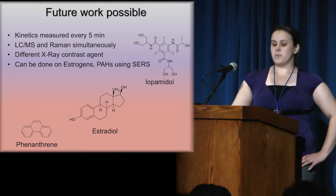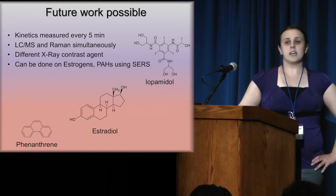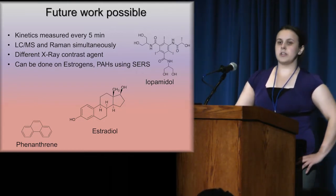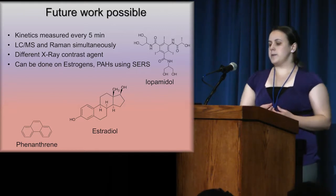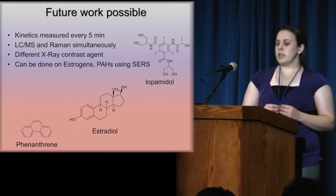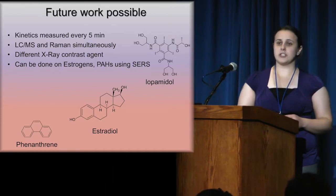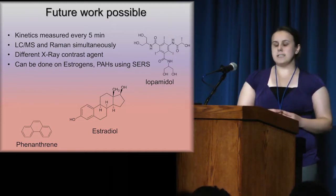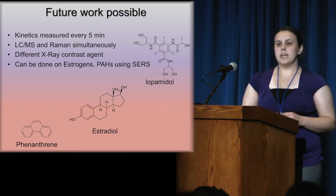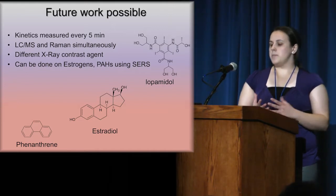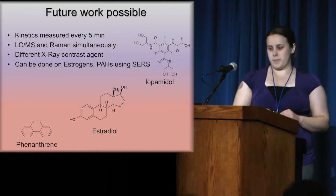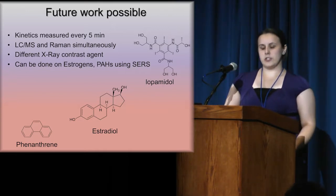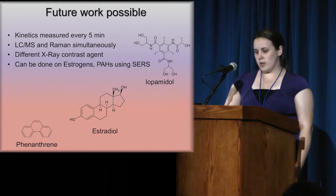For future work, we have been measuring kinetics every 30 minutes, but we eventually want to go faster — for example, every five minutes — to understand what is happening during those intervals. We also want to use LC-MS and Raman simultaneously to identify intermediates that are forming, and this can be done with different x-ray contrast agents, like iopromide.